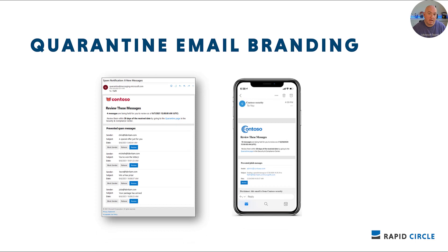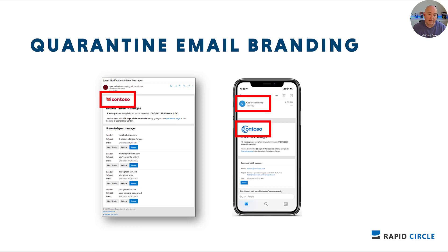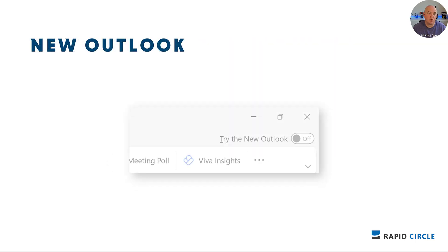Microsoft is also giving admins the ability to customize the quarantine email that you receive, to include an organizational logo, use an organizational email address so it comes up in the from address, and even change the subject of the notification. This is rolling out late July to early August, but look for communications from your IT team as to when they enable it in your organization, so you don't treat it as phishing email.